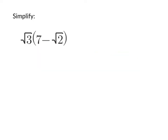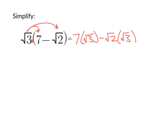So if we have an expression like the square root of 3 times the quantity 7 minus square root of 2, we still have the same setup where there's a coefficient — the square root of 3 — being multiplied by this set of parentheses. So it's the square root of 3 that gets distributed to every term: the 7 gets multiplied by square root of 3, and the minus square root of 2 also gets multiplied by square root of 3.